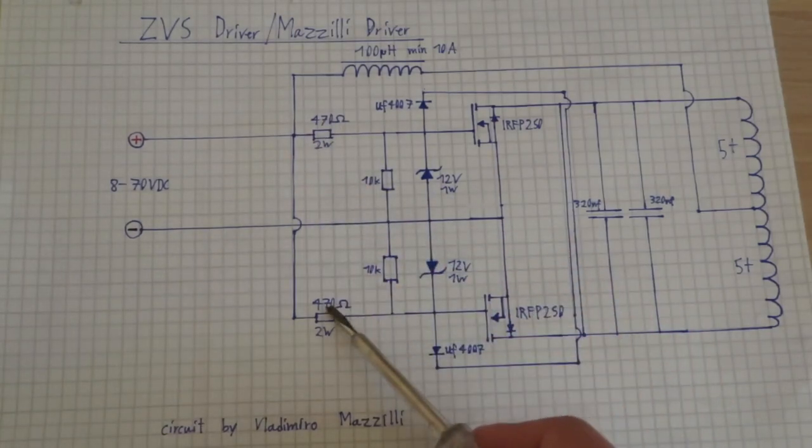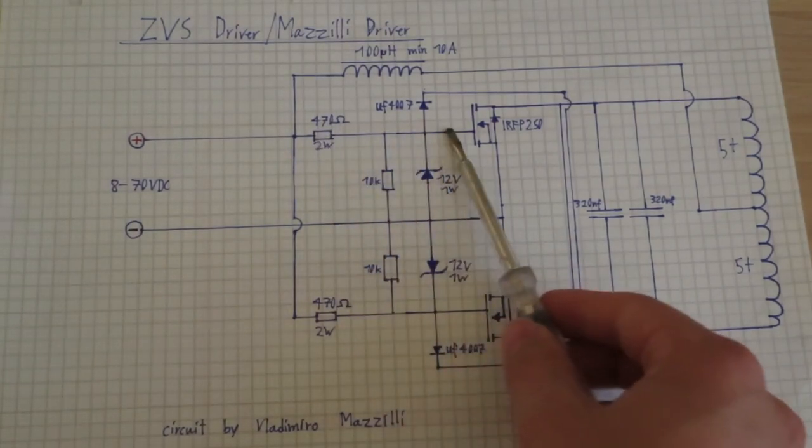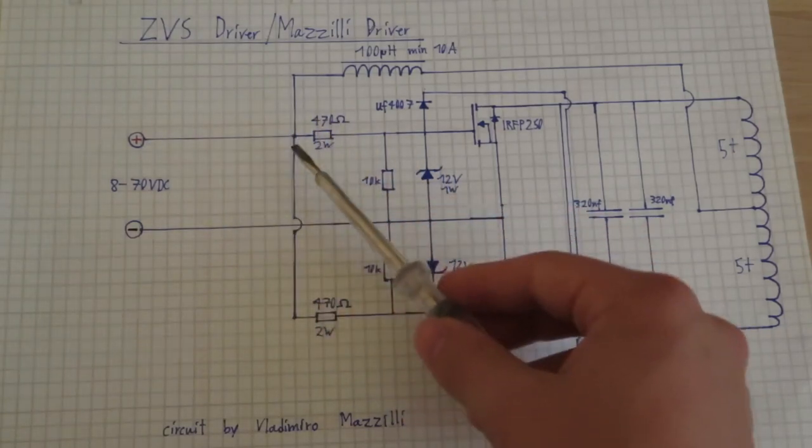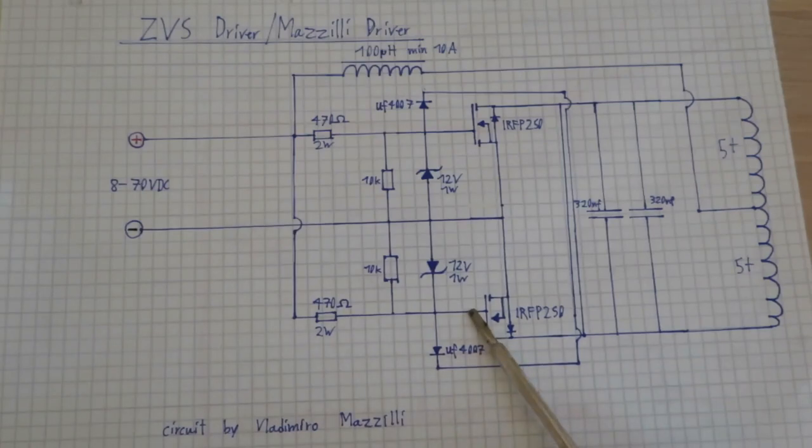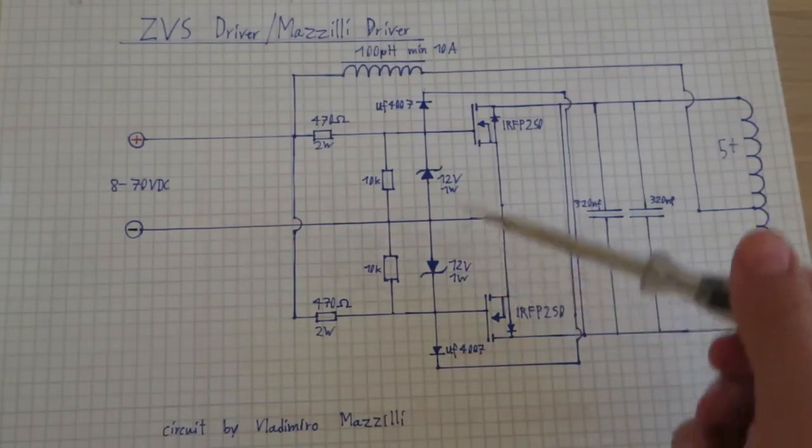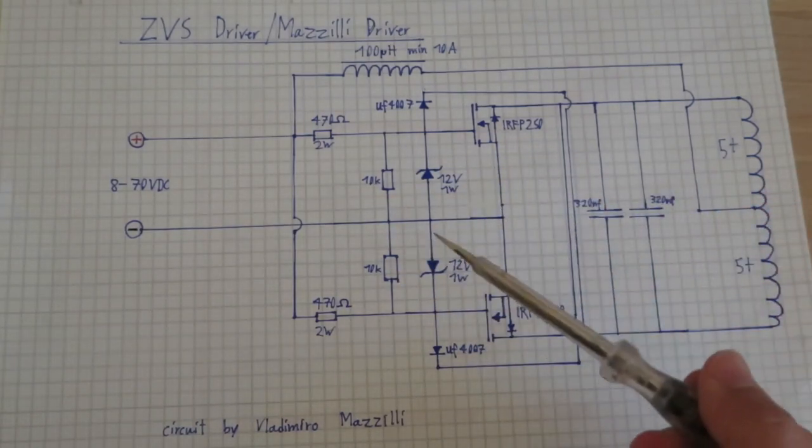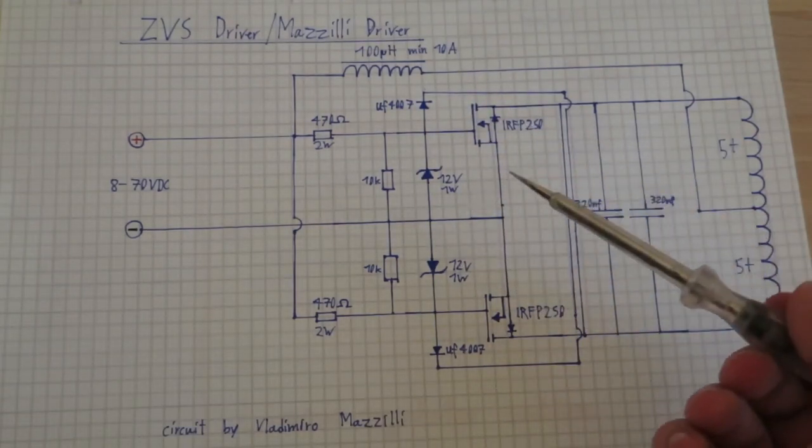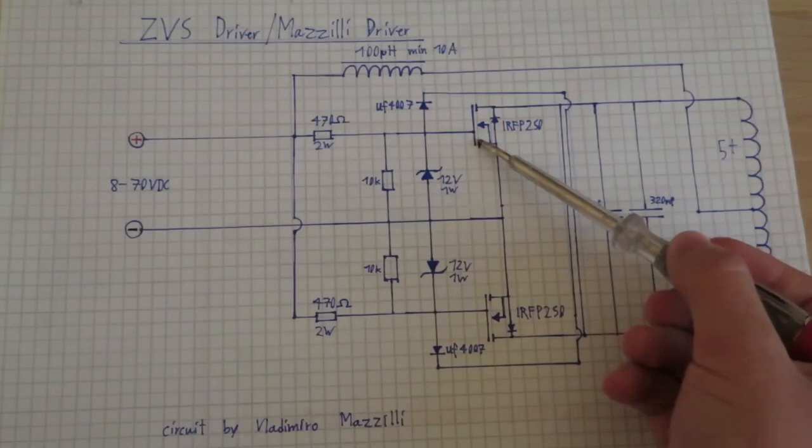We have these two resistors which are going to supply some current to the gates of the transistors. Now if you turn on the supply these gates are going to slowly charge, but because no two transistors are exactly identical, one of the transistors is going to turn on first, and let's say it's this one right here.